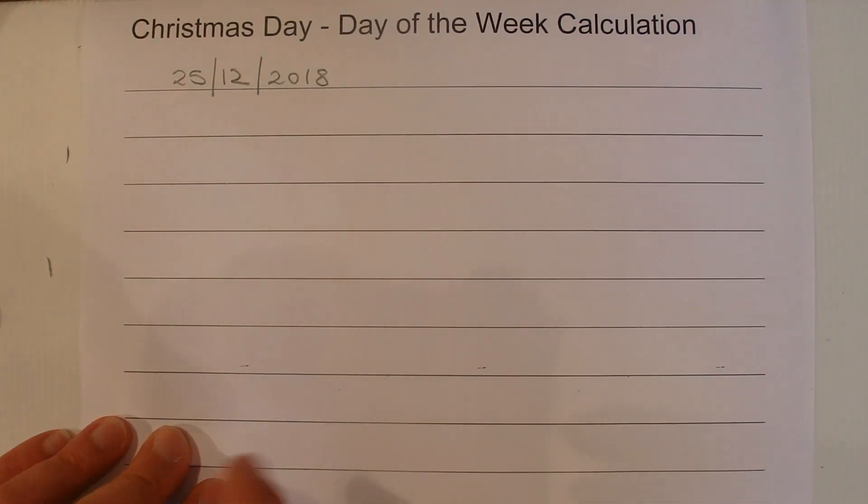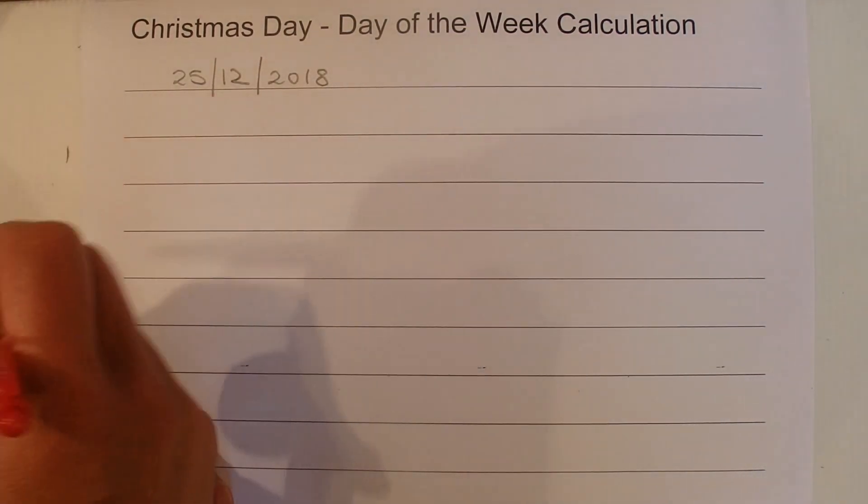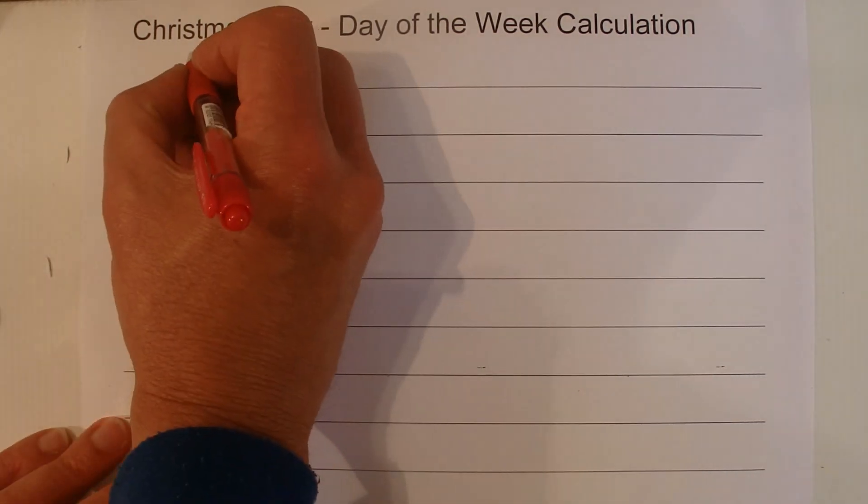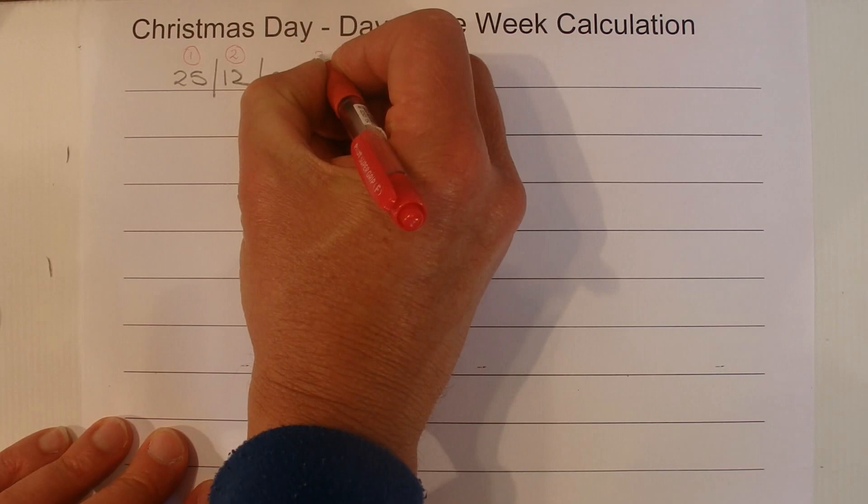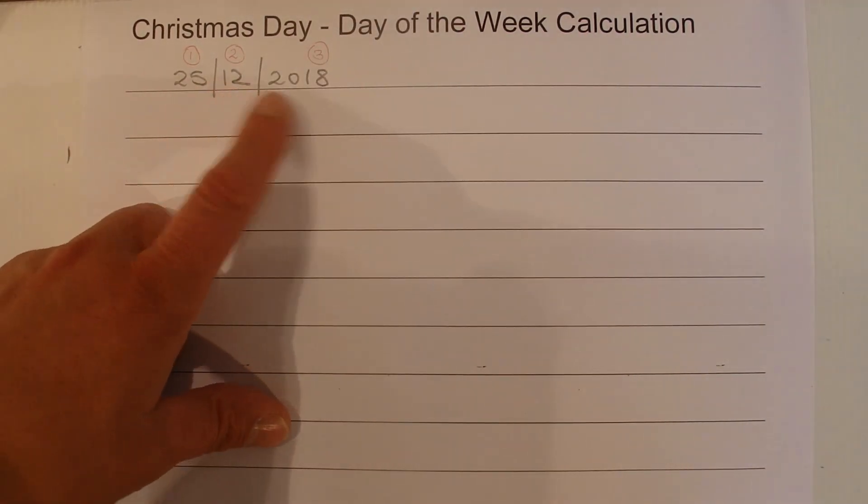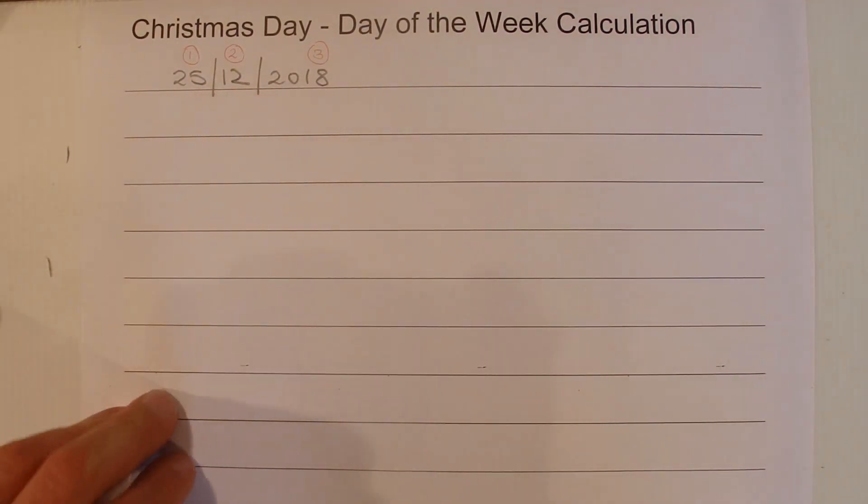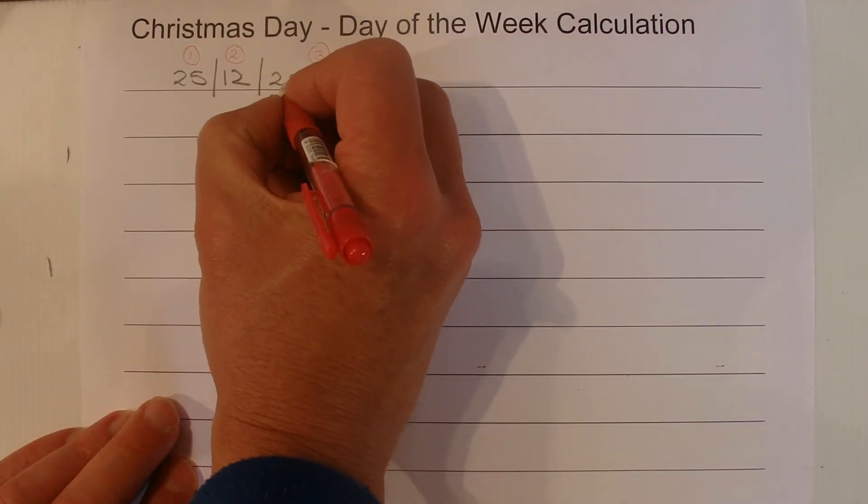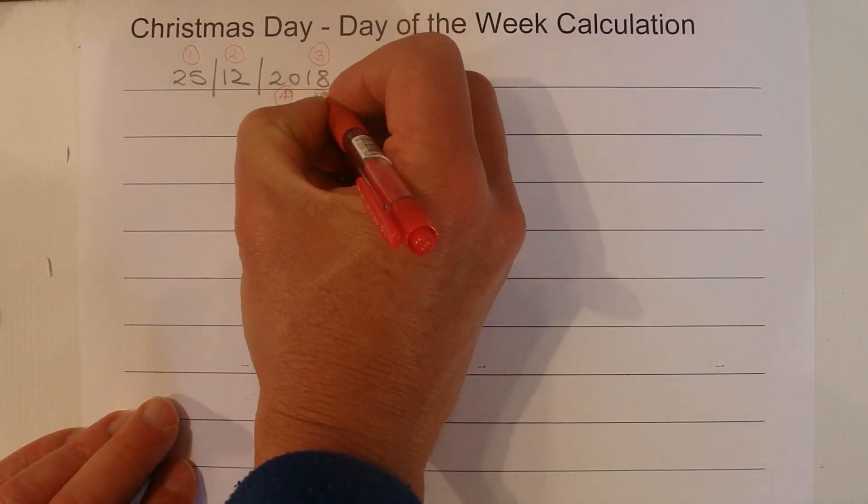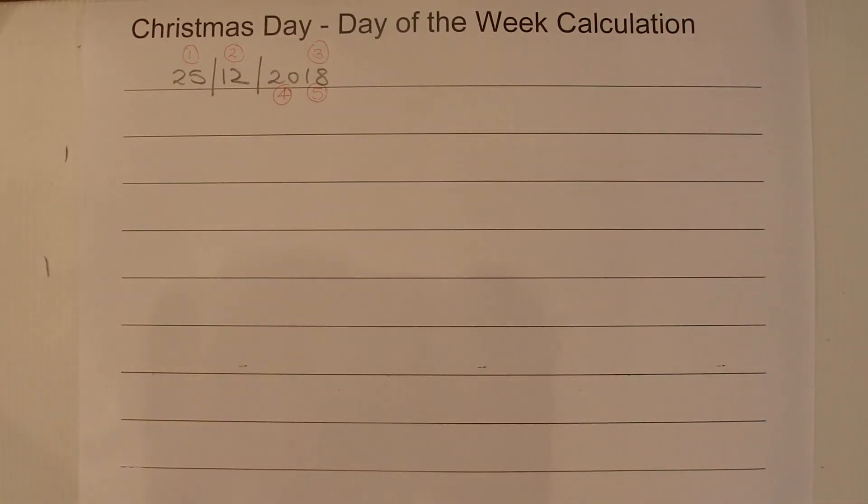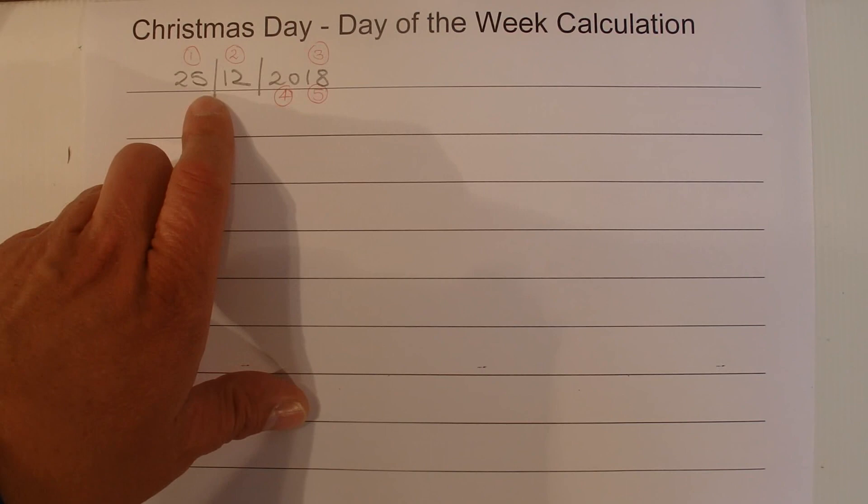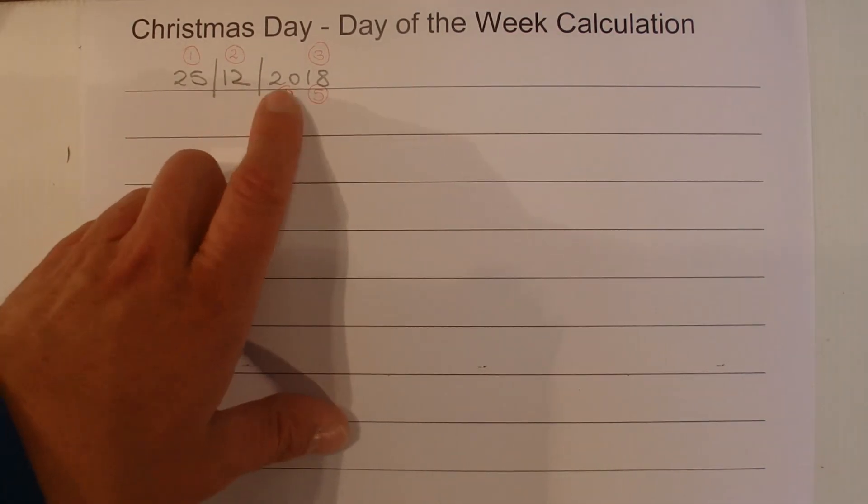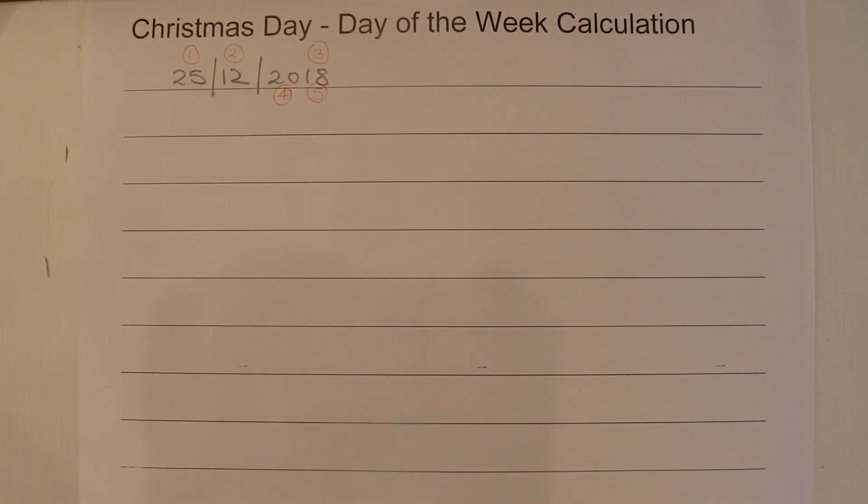And now your first step is to take that date and you pick up these five different sections: 1, 2 and 3, so we use the 25, the 12, and the 18 in the calculation. And also we use the 20 and we use the 18 again in the calculation. And I guess the great thing about this formula is you use all the numbers from the date to work out what day of the week Christmas Day falls on.